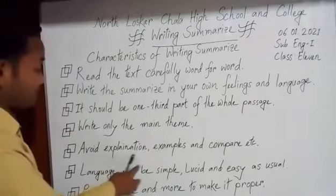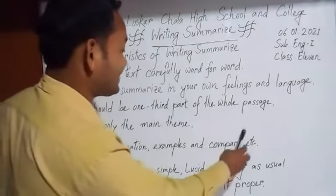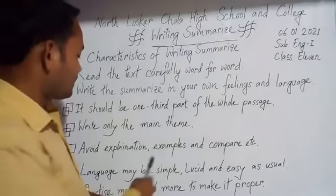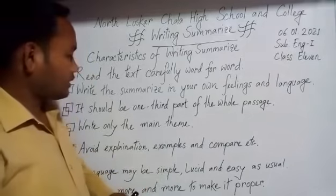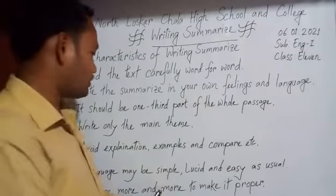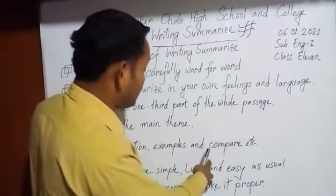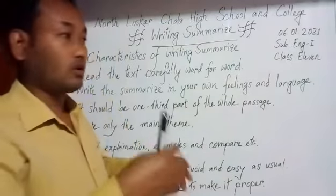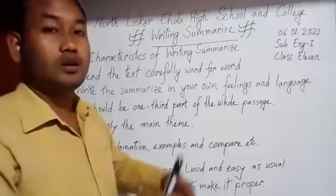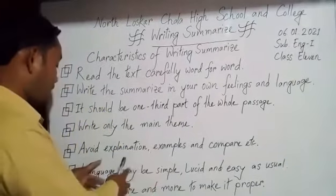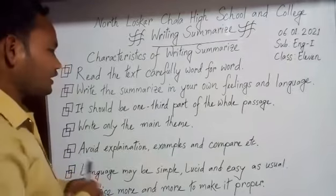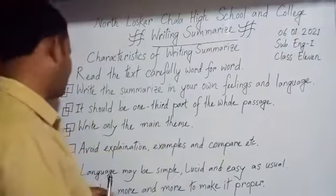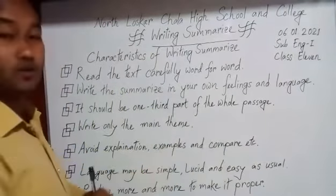Number six: language may be simple, lucid, and easy. The language in your summary should be very simple. It should be lucid and easy so that all people, students, and teachers can understand the language easily. This makes the writing of a summary properly attractive and successful.